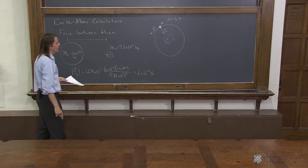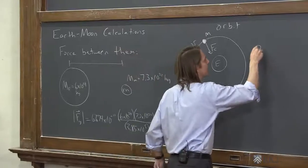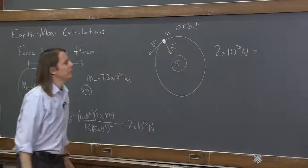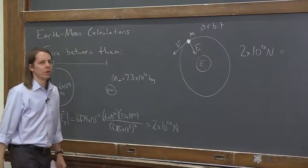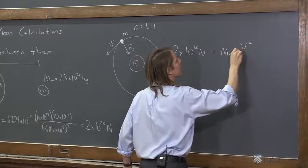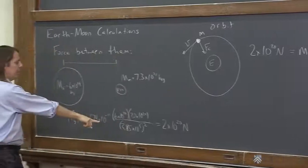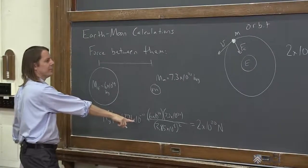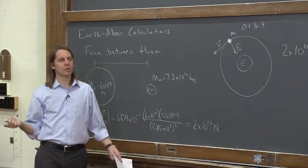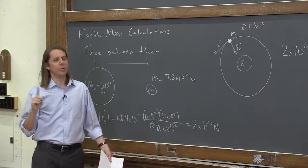So for a simple orbit calculation, you basically just say the GMm over r squared force is the centripetal force. So let's see if we can figure out how fast the Moon goes and see if we get the right answer. So we would say 2 times 10 to the 20 Newtons equals mv squared over r, mass of the Moon times the speed of the Moon over r, which was this radius here, 3.85 times 10 to the 8. But what I want to do is I don't really know the speed of the Moon. What we're going to do is change it real quick to the period,